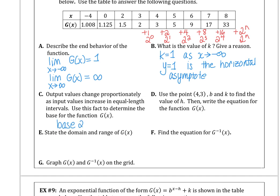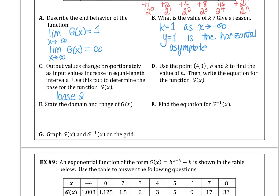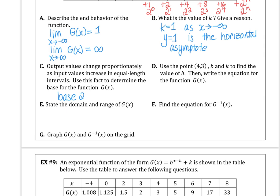And if we use the ordered pair 4,3, the base is 2, and the k value is 1, we can solve for h. So solving for h, 3 is 2 to the 4 minus h plus k is 1. So 3 minus 1 gives me 2. 2 is 2 to the 4 minus h. So when the bases are the same, 4 minus h is 1, h has to be 3. Our function is g of x is base 2, x minus 3, plus 1.